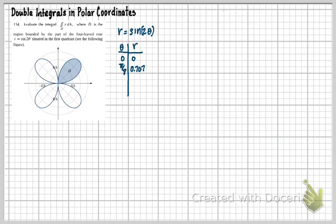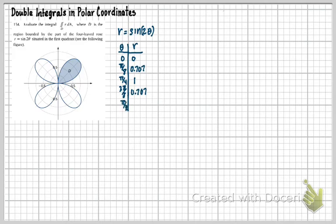For theta equals pi fourths, two times pi fourths is pi halves, and sine of pi halves is one. For three pi eighths, R is 0.707 again. Then for theta equals pi halves, two times pi halves is pi, and sine of pi is zero — so R is back to zero. Since the problem specifies the first quadrant, I go from theta equals zero to pi halves, and I'll stop there.